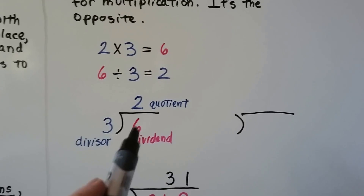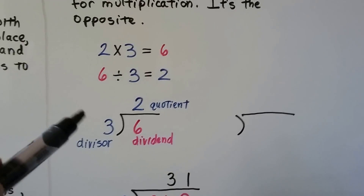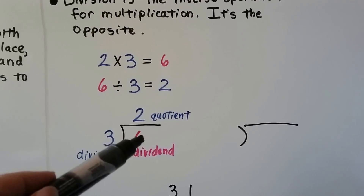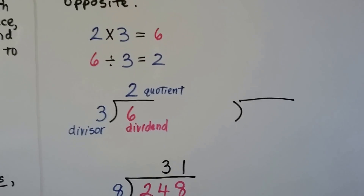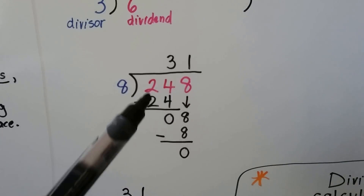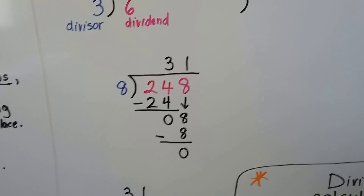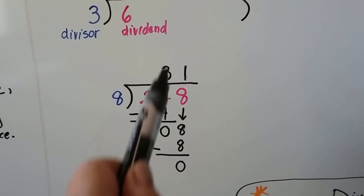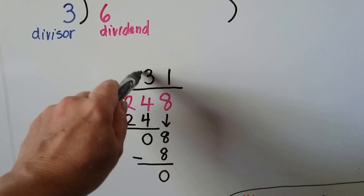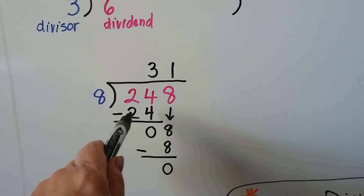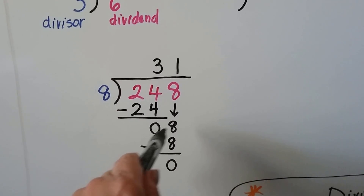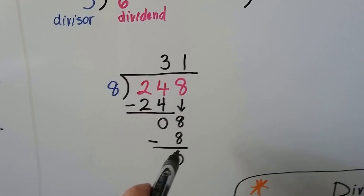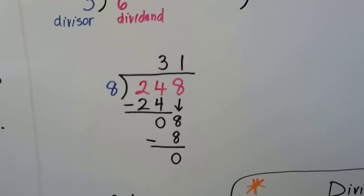The dividend, the big number, goes inside. The number it's being divided by is on the outside. So if we want to divide 248 by 8, we ask: can 8 fit into 2? Nope. Can it fit into 24? Yes, three times. Three times 8 is 24 — we write 3 and subtract. 24 minus 24 is zero, then bring down the 8. How many times can 8 fit into 8? One time. 8 times 1 is 8, we subtract, get zero — no remainder.